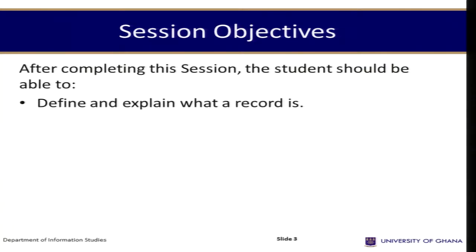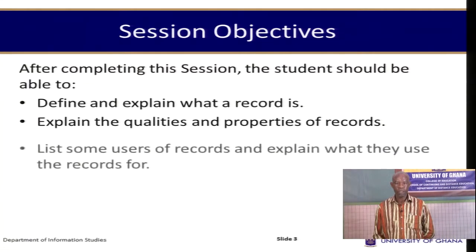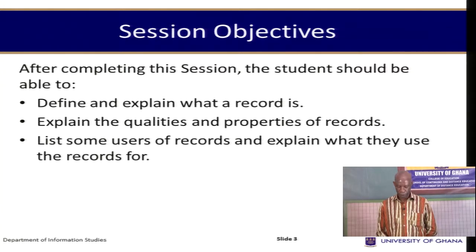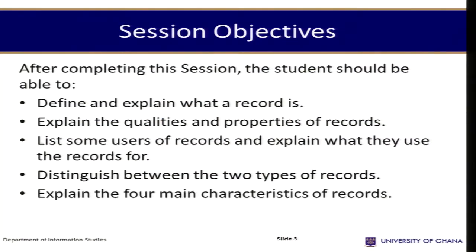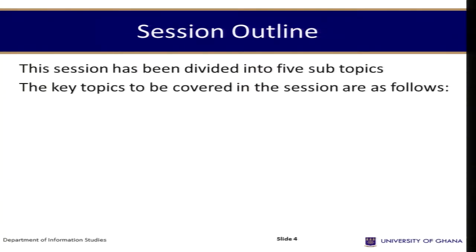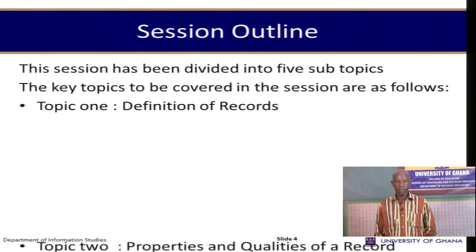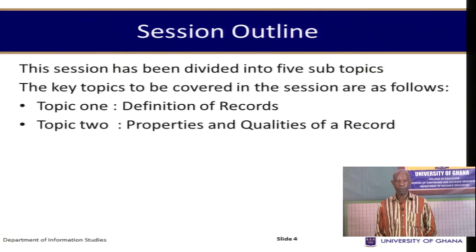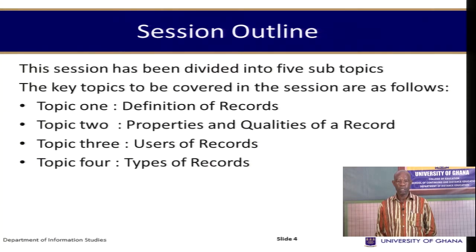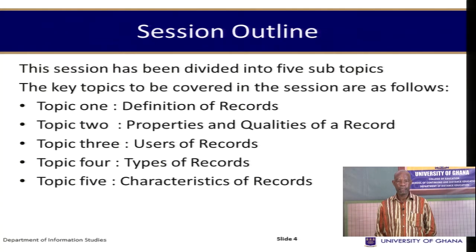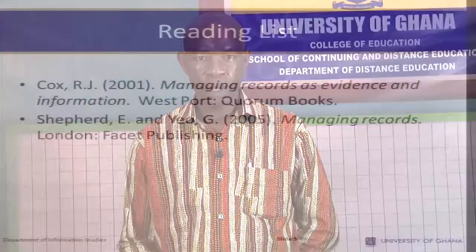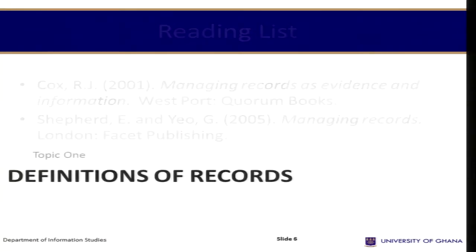This will be handled in Session One. After completing this session, students should be able to: define and explain what a record is; explain the qualities and properties of records; list some uses of records; distinguish between the two types of records; and explain the four main characteristics of records. The session has been divided into five sub-topics: definition of records, properties and qualities, uses of records, types of records, and characteristics of records.